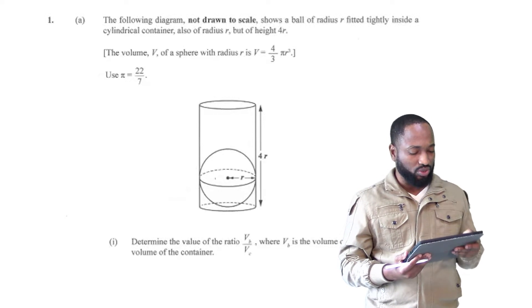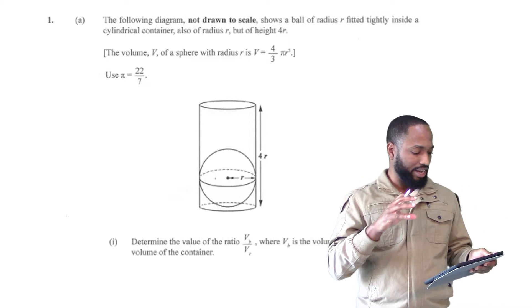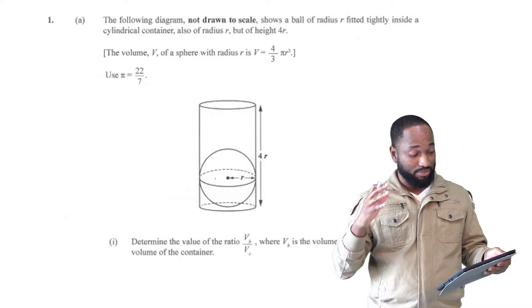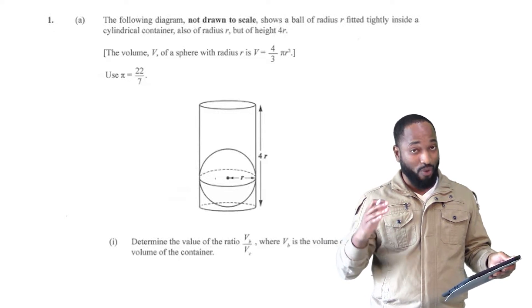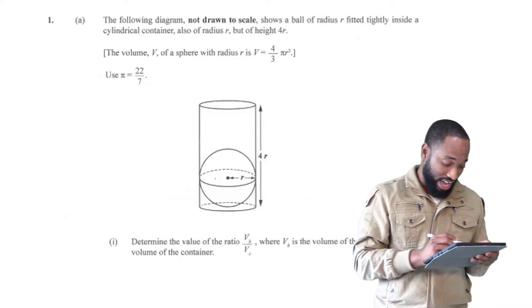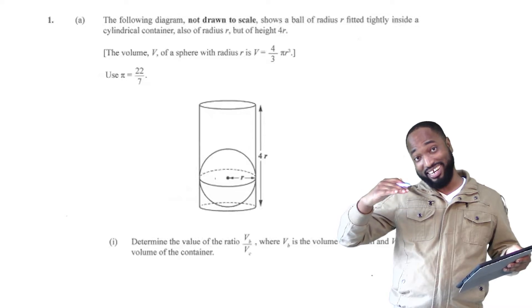So the following diagram, not drawn to scale, shows a ball. What's really happening here is there's a spherical ball in a cylinder. CXE has been getting increasingly wild with these measurement questions. There's a ball in a cylinder and we need to determine the ratio of the volume of the ball to the volume of the cylinder.